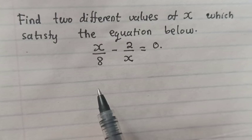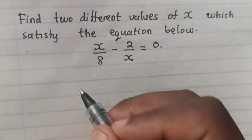How can we solve for x in this equation? Let's see. Find two different values of x which satisfy the equation below.